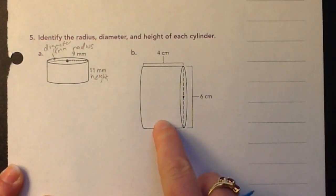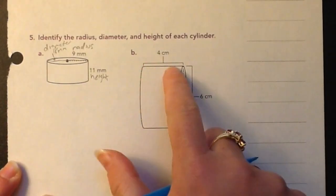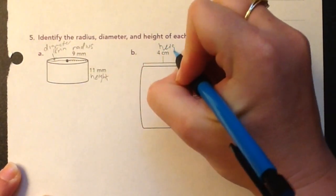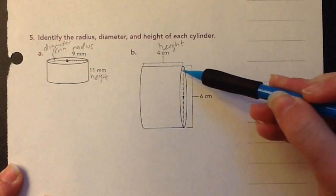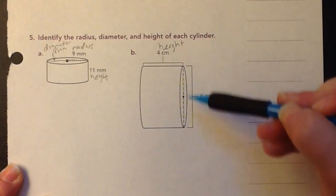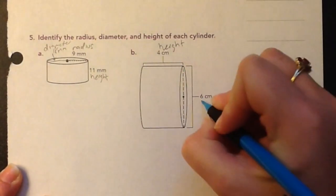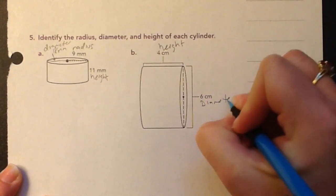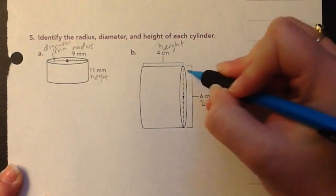On B, the height is this 4. Here we have this dimension going all the way across the circle. So this is the diameter. And the radius is half of that.